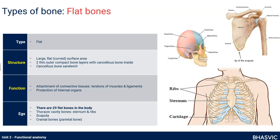Moving on to flat bones. Flat bones have a couple of functions. You can see the scapula has a huge surface area — it's fairly thin. Your cranial bones are lots of flat bones fused together by fibrous joints. Your sternum is a flat bone. Structurally, they have a large flat surface area. Think of it like a cancellous bone sandwich: a thin compact layer on top, a thin compact bone layer on the bottom, and cancellous tissue inside like the sandwich filling.